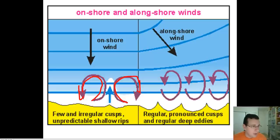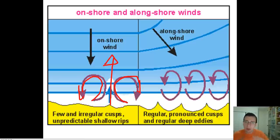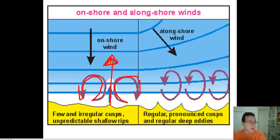Whenever you have one of these divergent zones with waves flowing in opposite directions, you're going to have a very strong undertow happening underneath, which will carve that channel that will later be used by the rip current to flow water back into the ocean. So whenever you have onshore winds, you are going to get more rip currents.